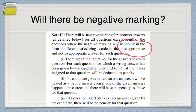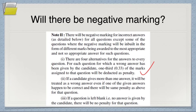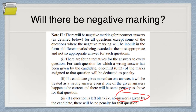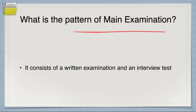Don't be afraid of negative marking — you need to attempt at least 85 percent of the paper, otherwise you won't qualify anyway. For each question where a wrong answer is given, one-third of the marks assigned to that question will be deducted as penalty. If a candidate gives more than one answer, it will be treated as a wrong answer even if one of the answers happens to be correct, and the same penalty applies. If a question is left blank, there is no penalty. Attempt at least 85 percent of the questions.